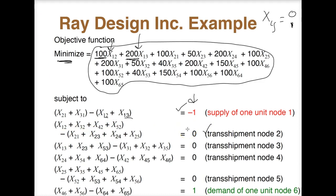When we get down to the demand node, it's just like the supply node — we look at everything going in and going out — but the result here is going to be one instead of negative one.